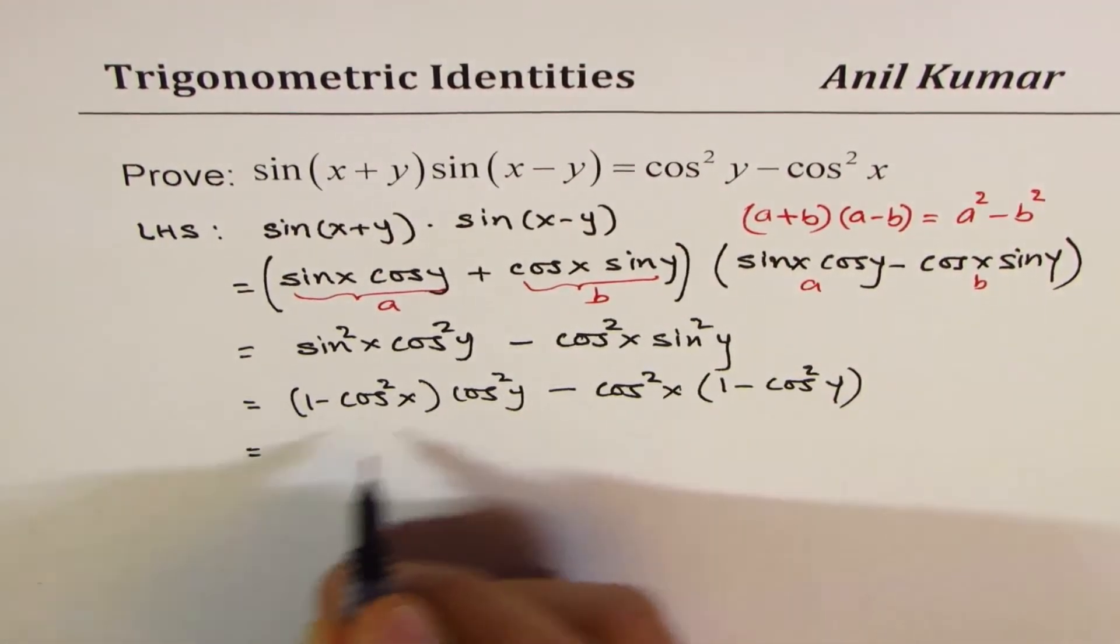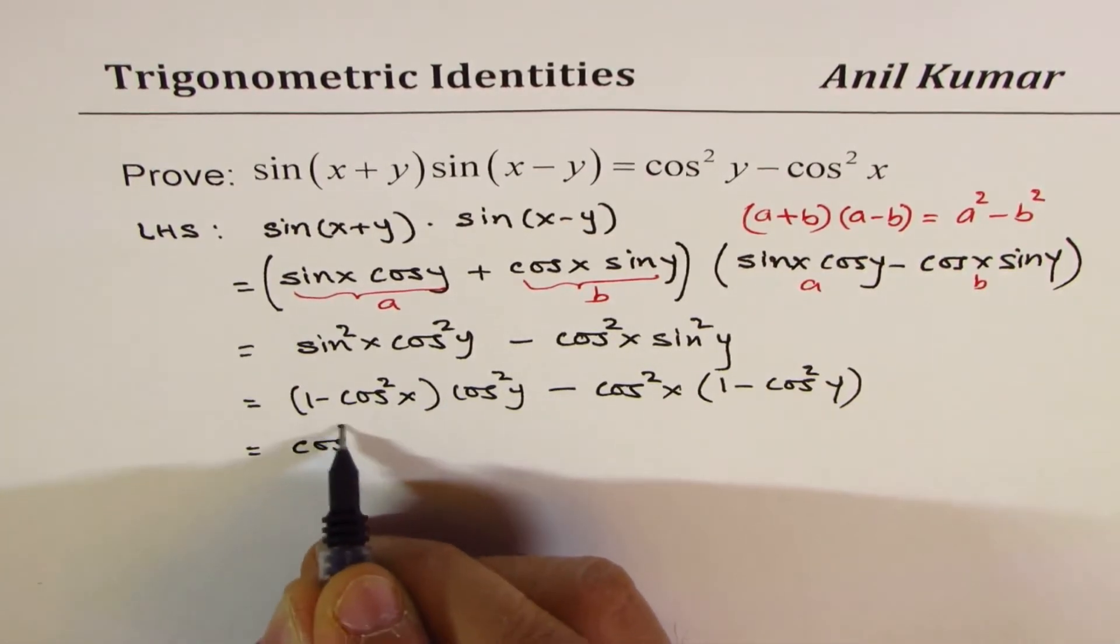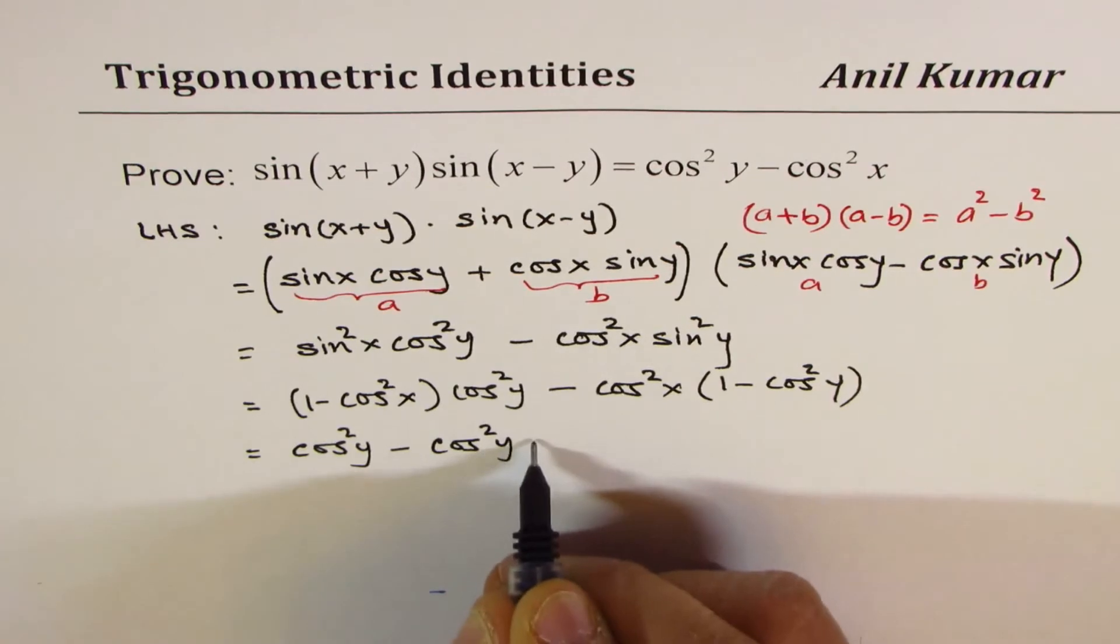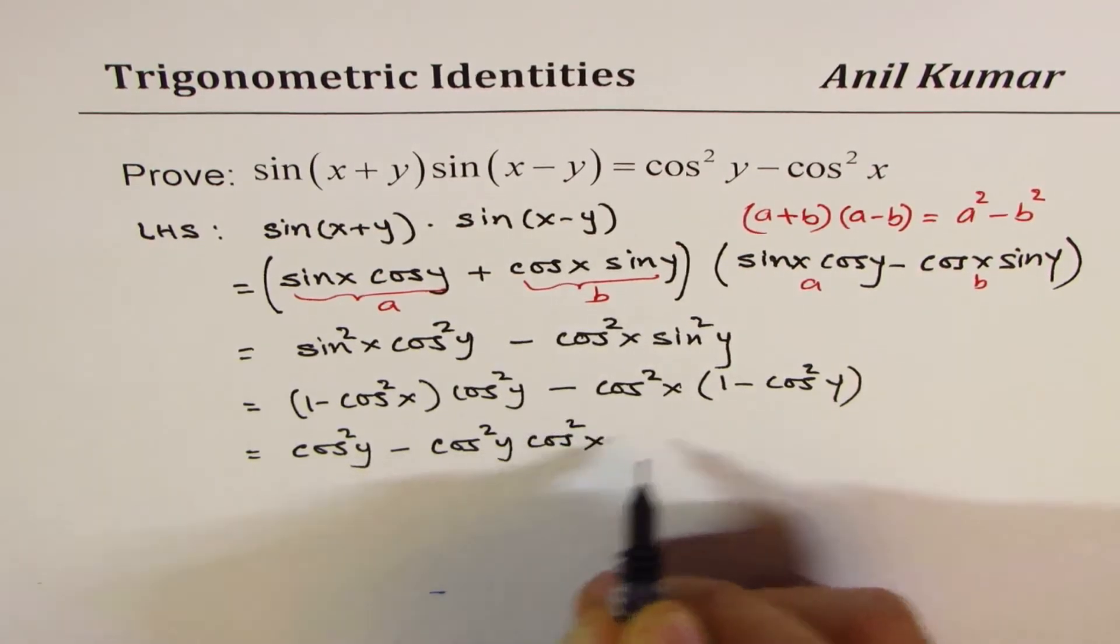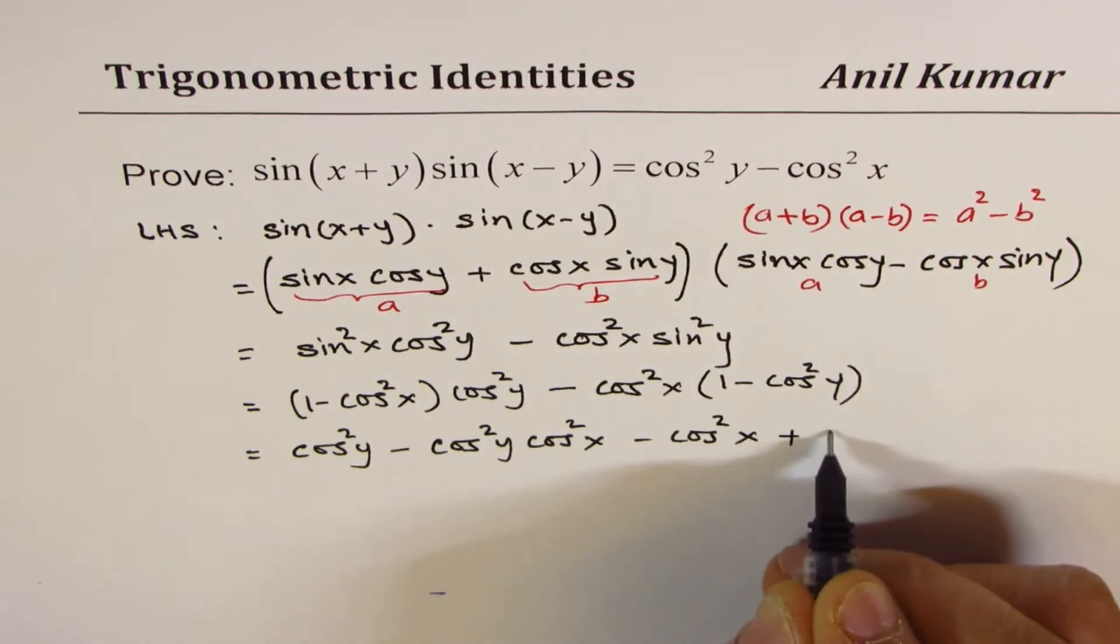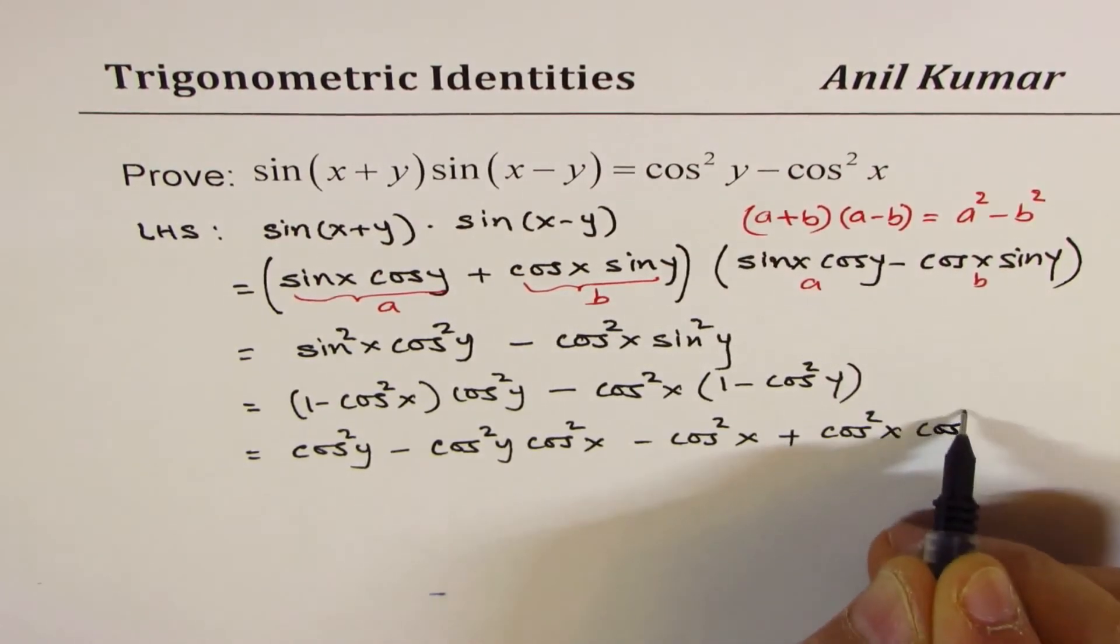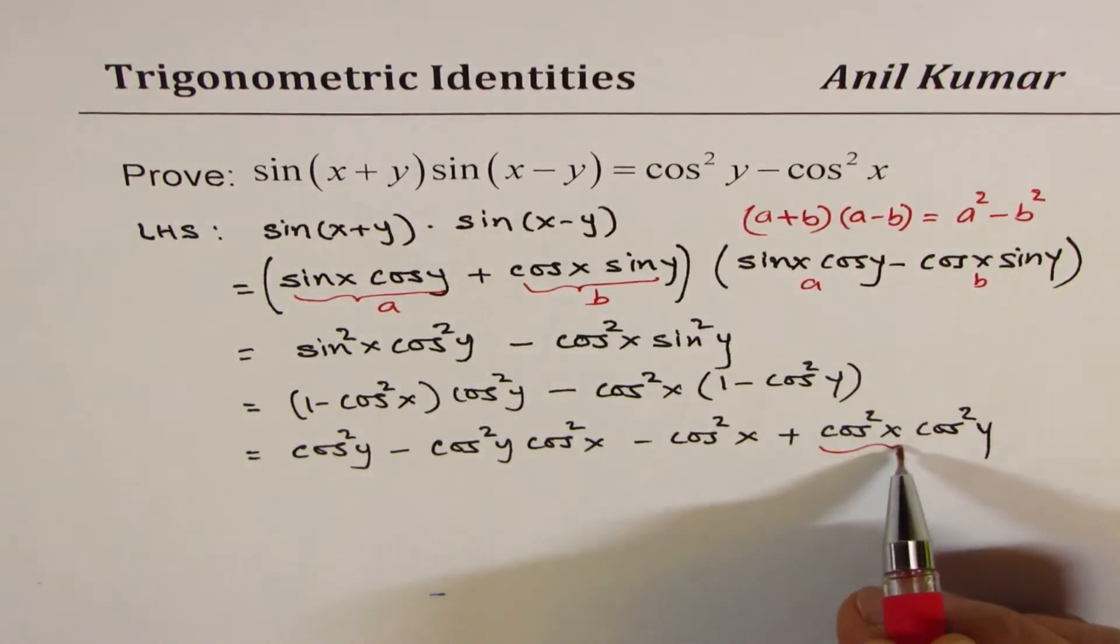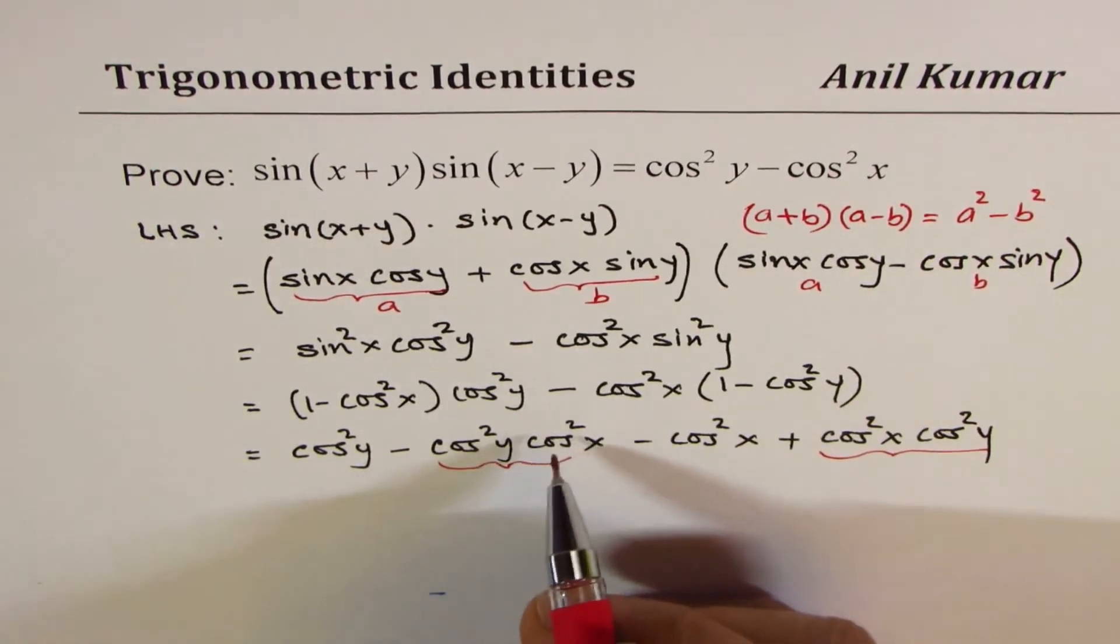Now let's open the brackets. So we get cos²y minus cos²y cos²x. And here we get minus cos²x plus cos²x cos²y. Now the terms cos²x cos²y cancel out.